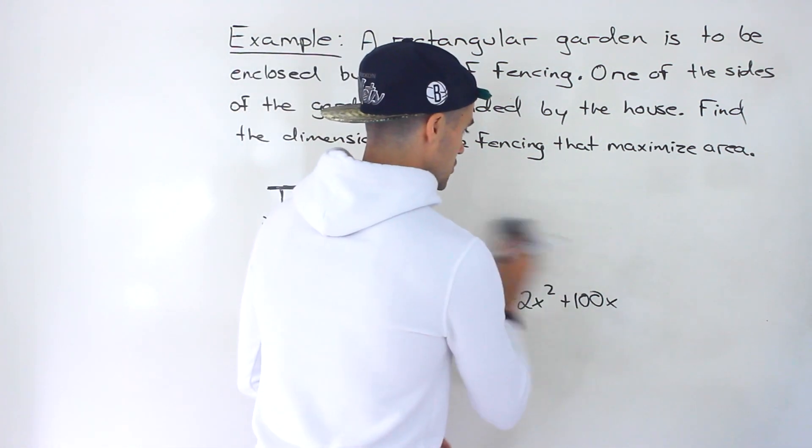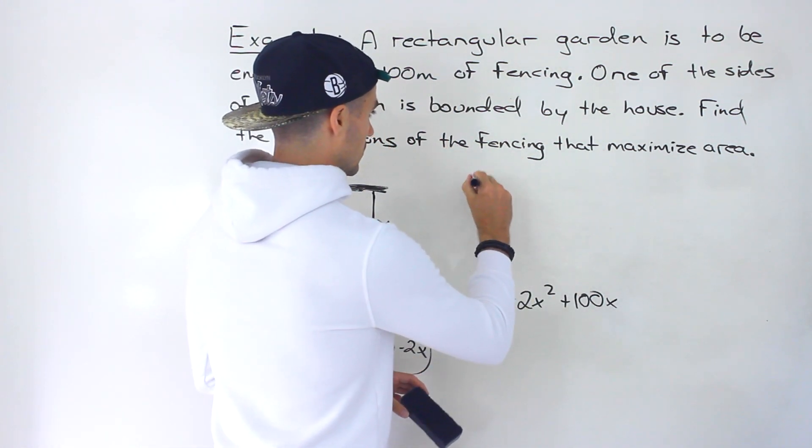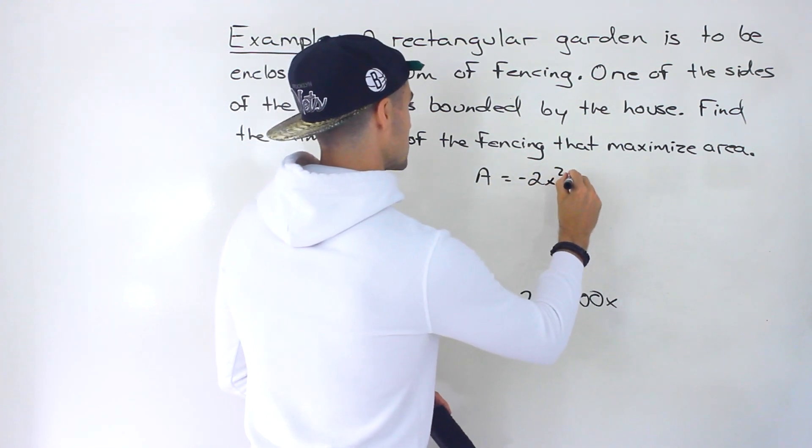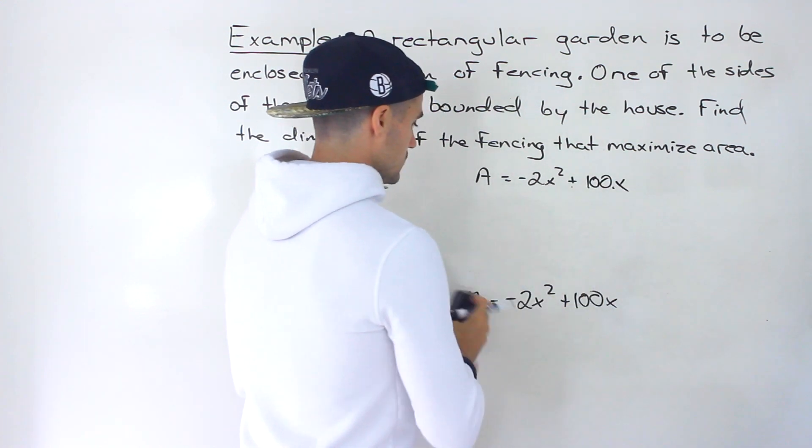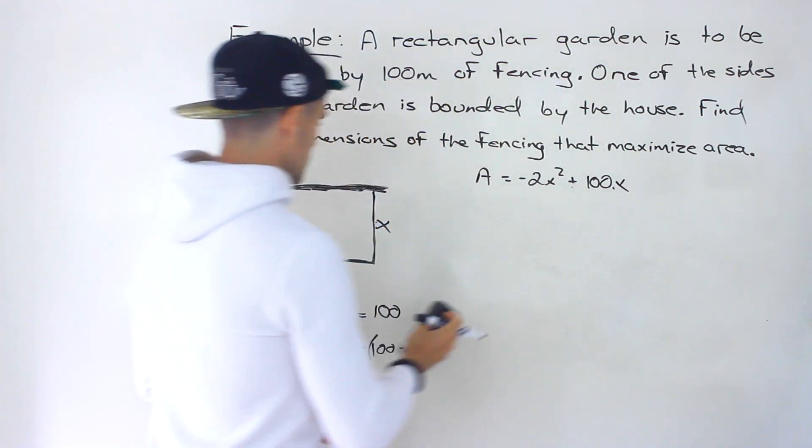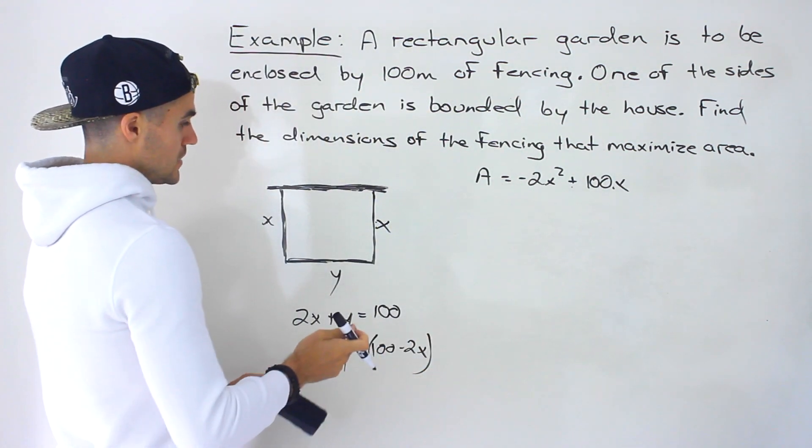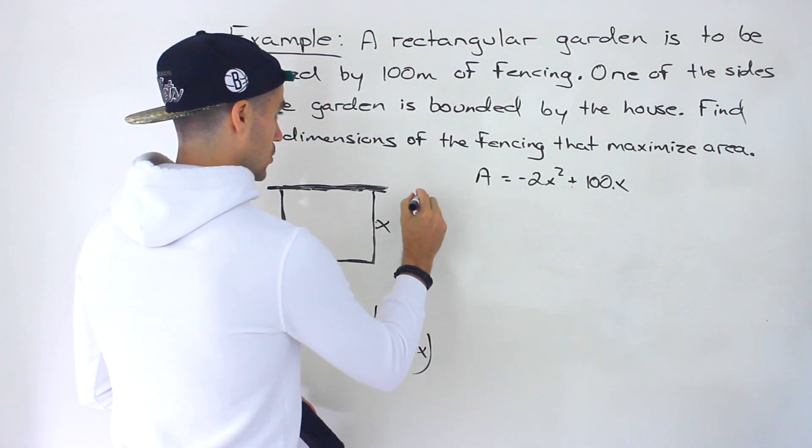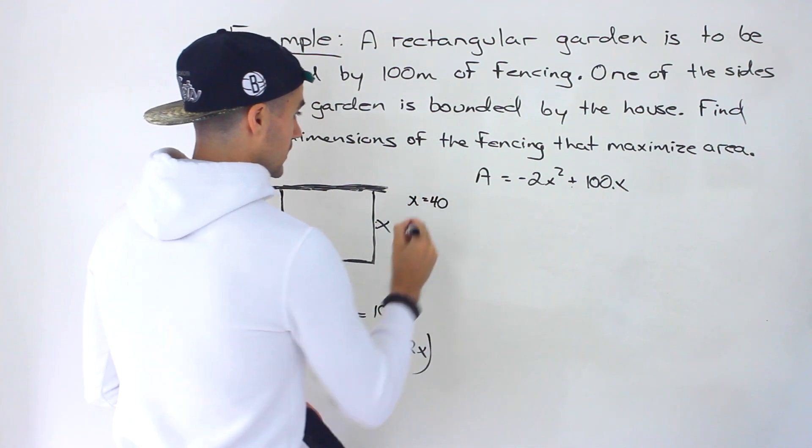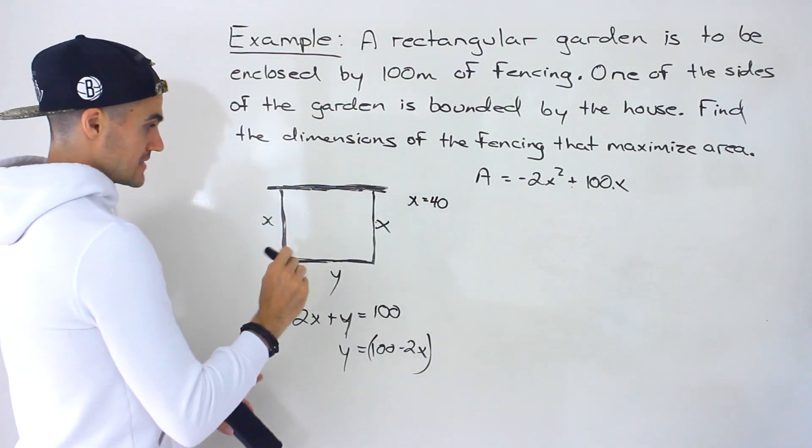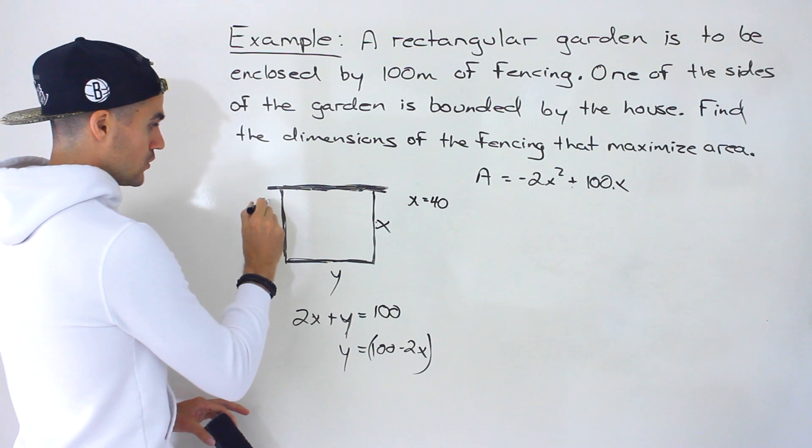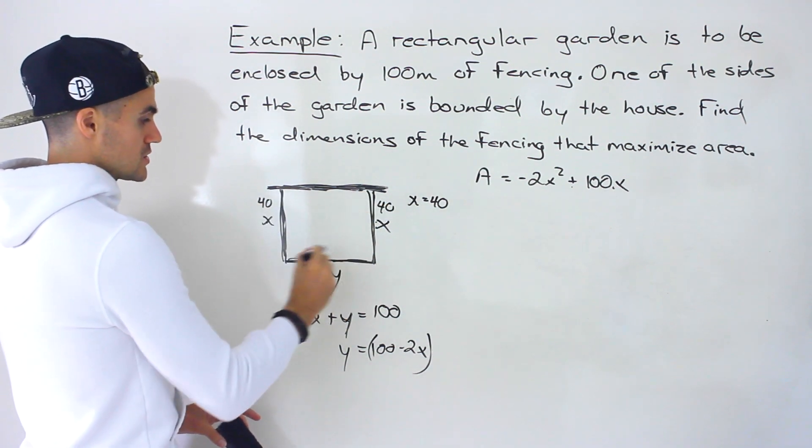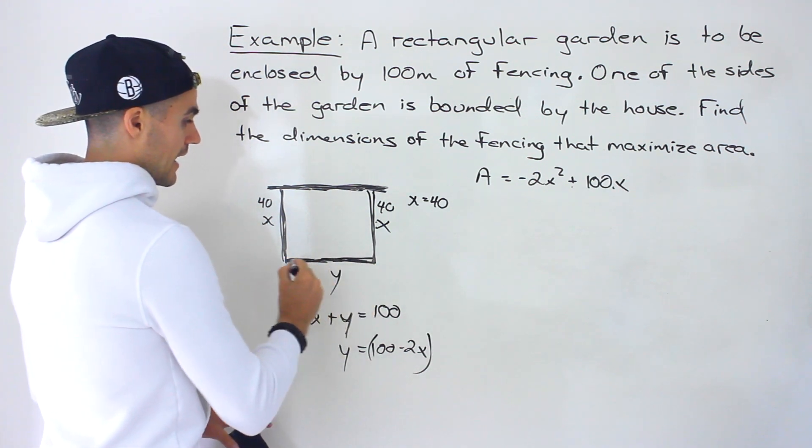And then we could test this relationship out. So let's write this over here. What we could do is we can maybe try just a random case. So let's say we let X be, let's say we let X equal 40. Now if X is 40, that means we're going to have 40 over here. We're going to have 40 over here, 40 meters, 40 meters. So what's this going to have to be?